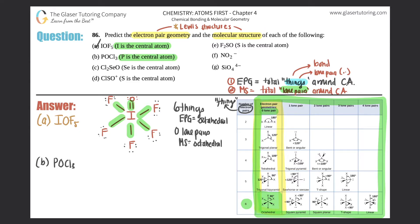Part b: POCl3. Phosphorus is the central atom, surrounded by three chlorines — one, two, three. Each chlorine has three lone pairs to satisfy the octet rule. The Lewis structure has a double bond to oxygen, with phosphorus having no lone pairs and oxygen having two. Counting the things on phosphorus: three single bonds and one double bond gives four things.